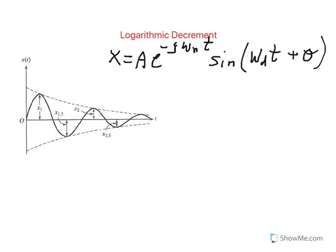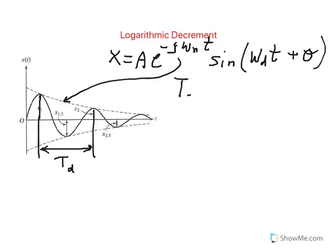You can see that the displacement X has an amplitude getting smaller and smaller, and this decay is within an envelope. This dashed line basically shows how the system is decaying. The sine wave amplitude gets smaller and smaller. Between peak to peak, we have the damped period T_D, and T_D is equal to 2π divided by omega_D.